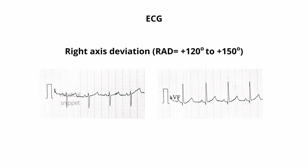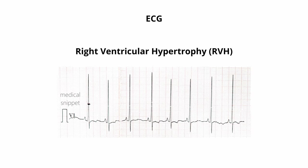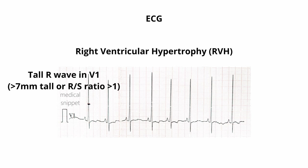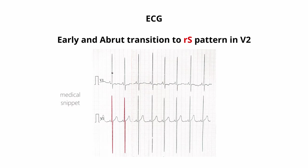The electrocardiogram shows right axis deviation, usually between 120 to 150 degrees, and features of right ventricular hypertrophy — that is, a dominant R wave in V1 more than 7 millimeters tall. There is an early and abrupt transition to RS pattern in V2.